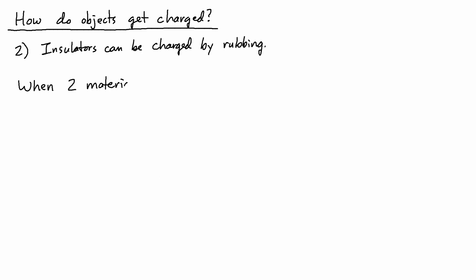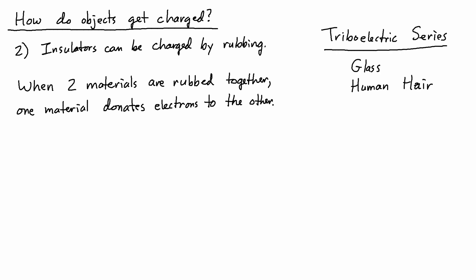When two materials are rubbed together, one material donates electrons to the other. This brings us to the idea of the triboelectric series. The triboelectric series here of glass, human hair, paper, steel, rubber, styrofoam, and Teflon is just a very short list from a longer triboelectric series.